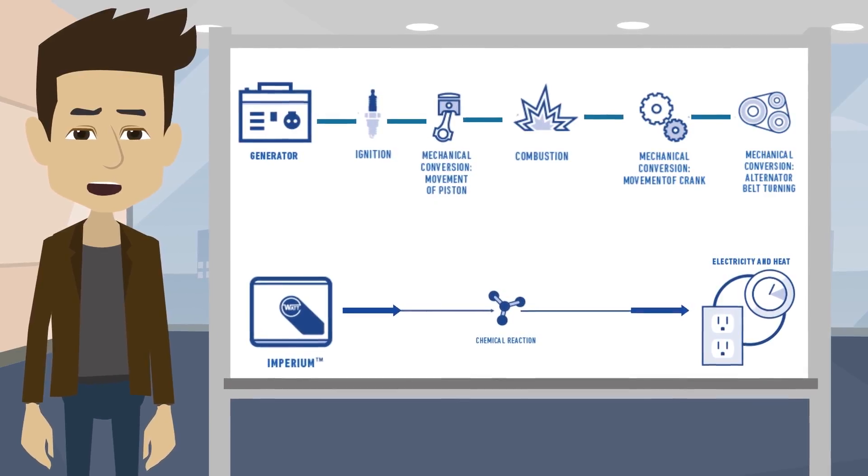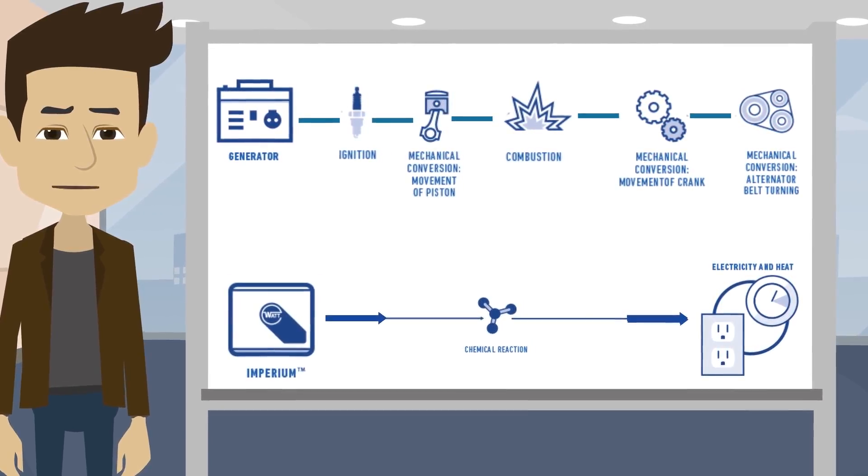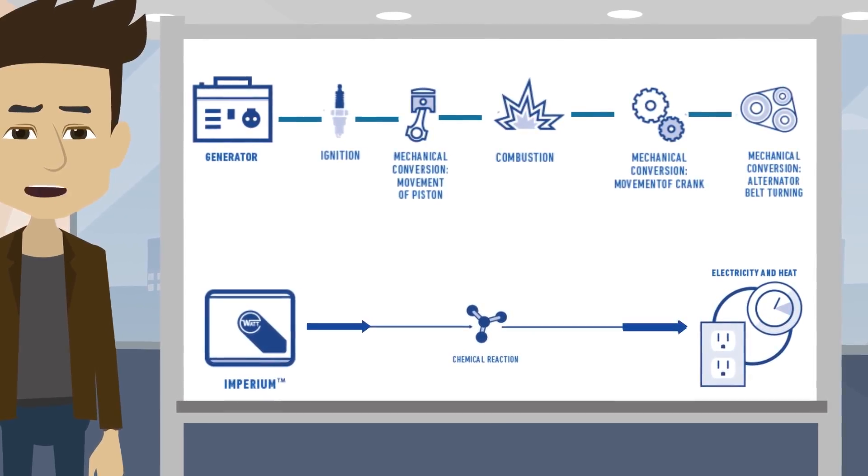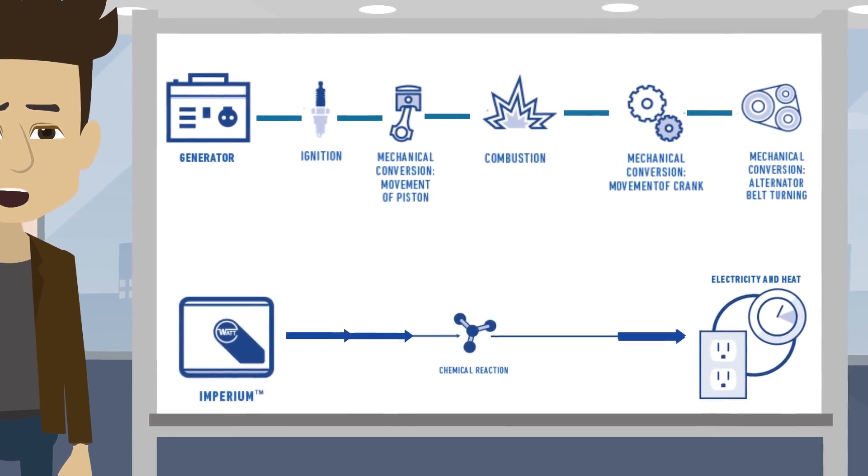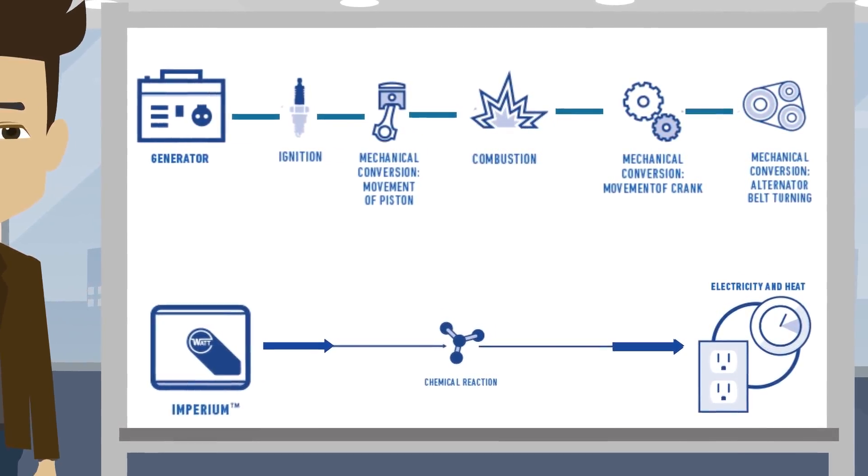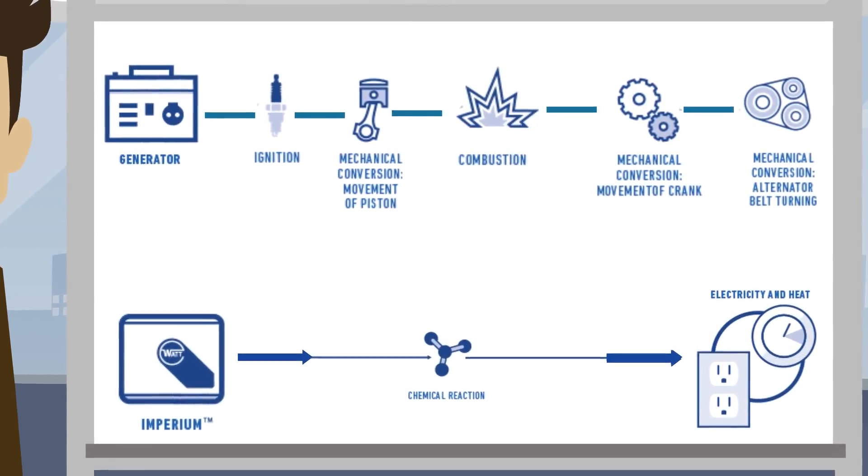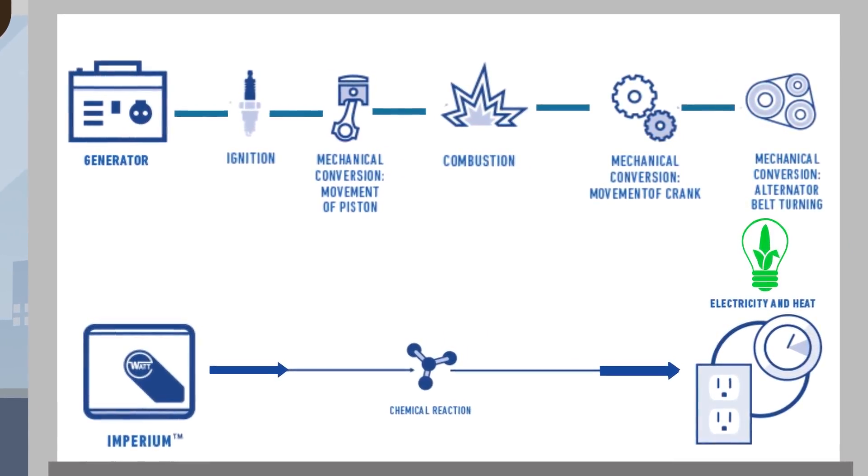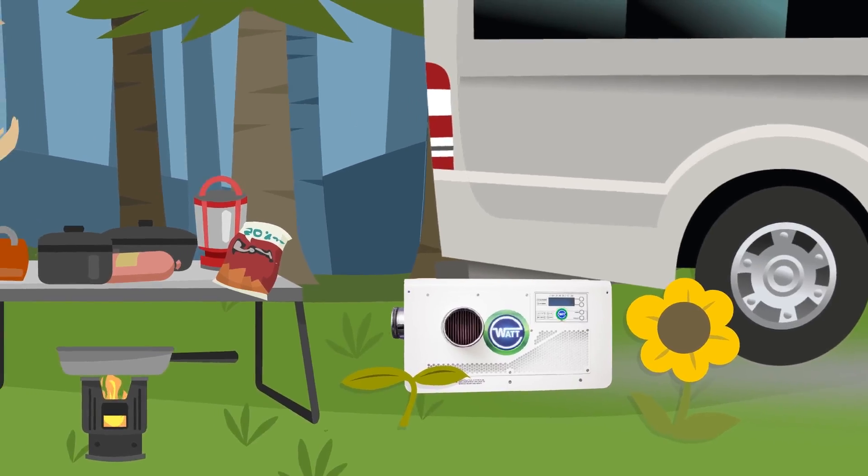a Watt Fuel Cell directly converts fuel into usable electricity and heat. It does this through a chemical reaction, and the resulting emissions are simply water and carbon dioxide. This process is highly efficient and creates minimal noise and less emissions.